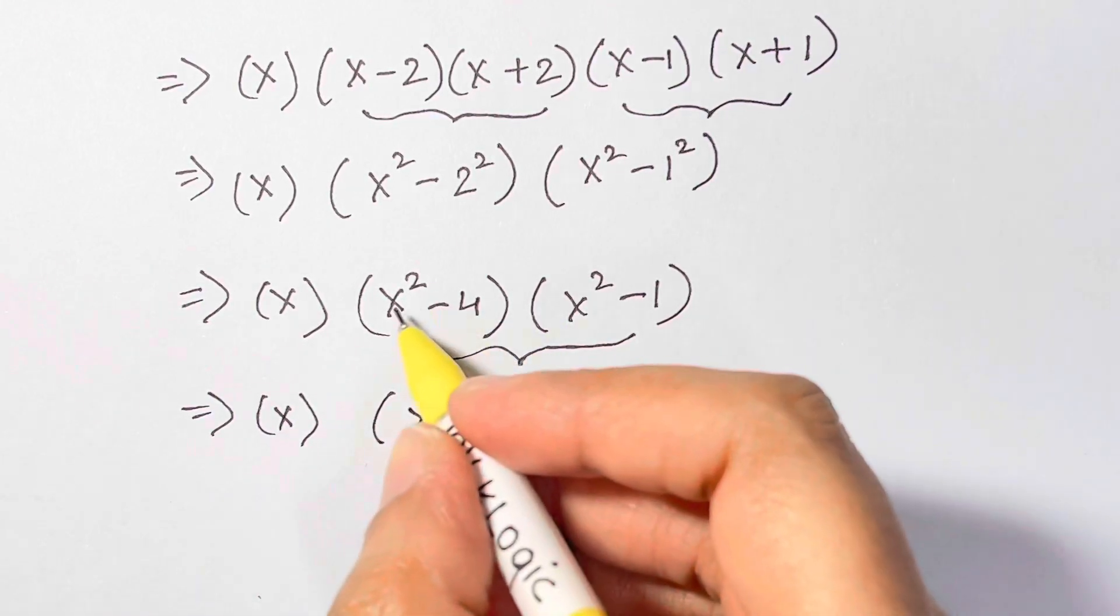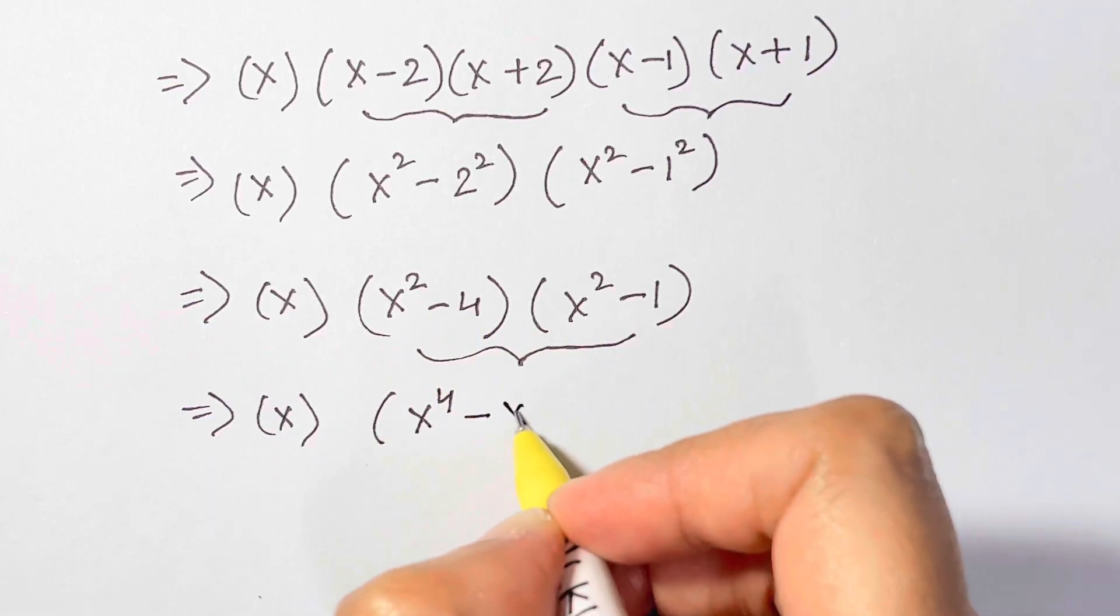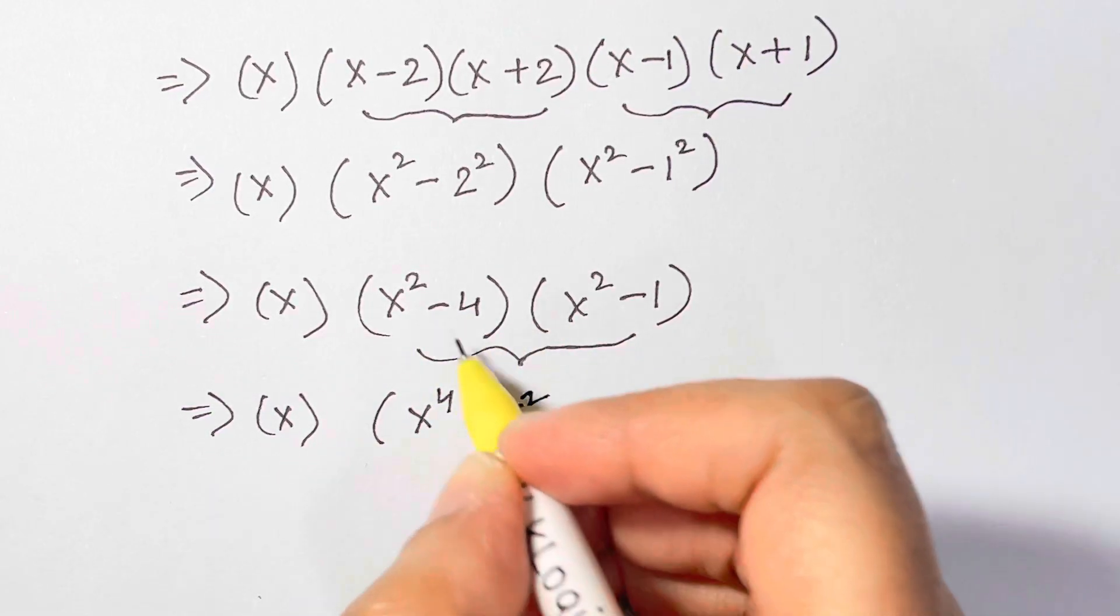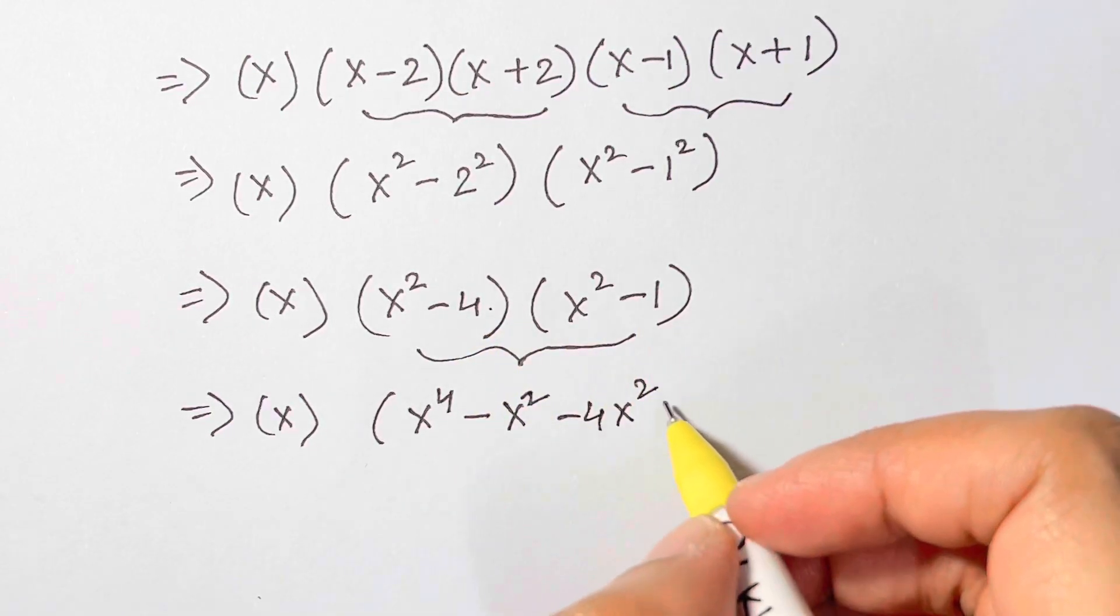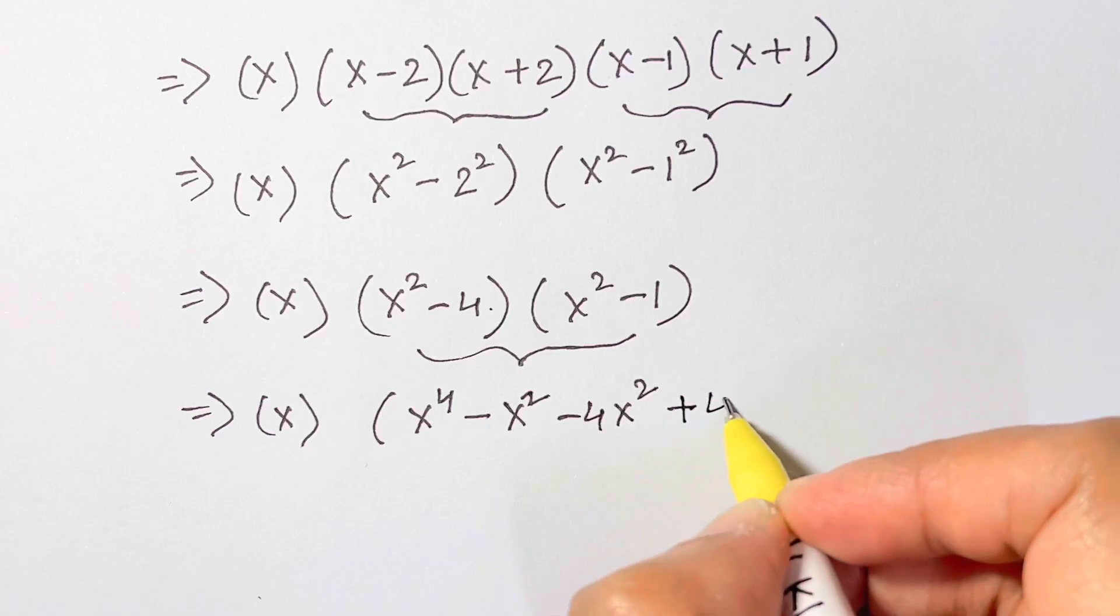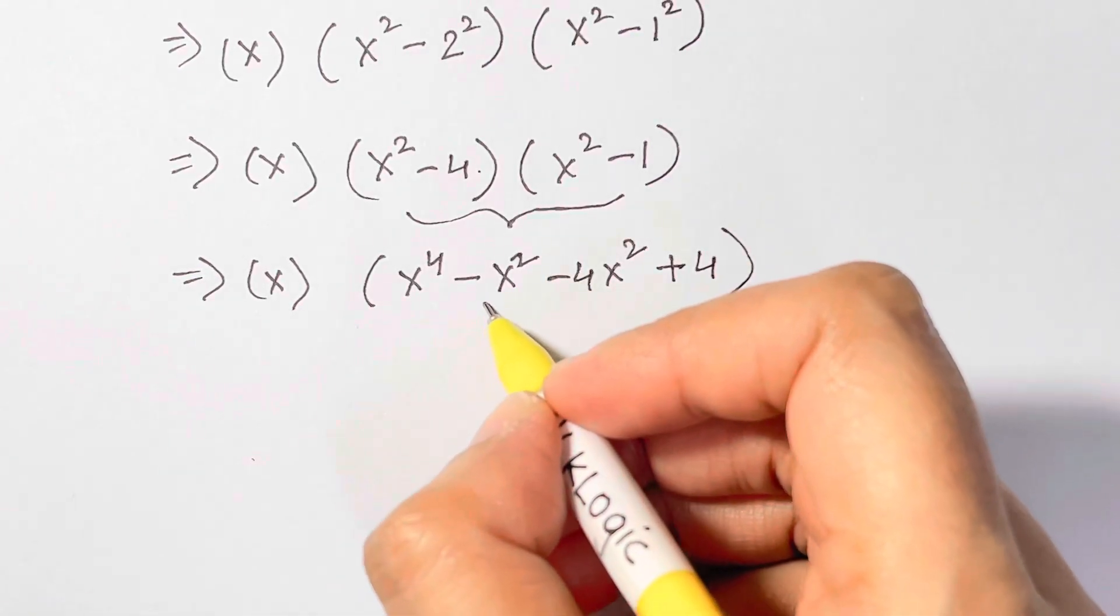We have x, then we have x² times x², x to the power of 4, x² - 1 - x² - 4 times x² - 4 x², and then -4, -4, -1 is +4.